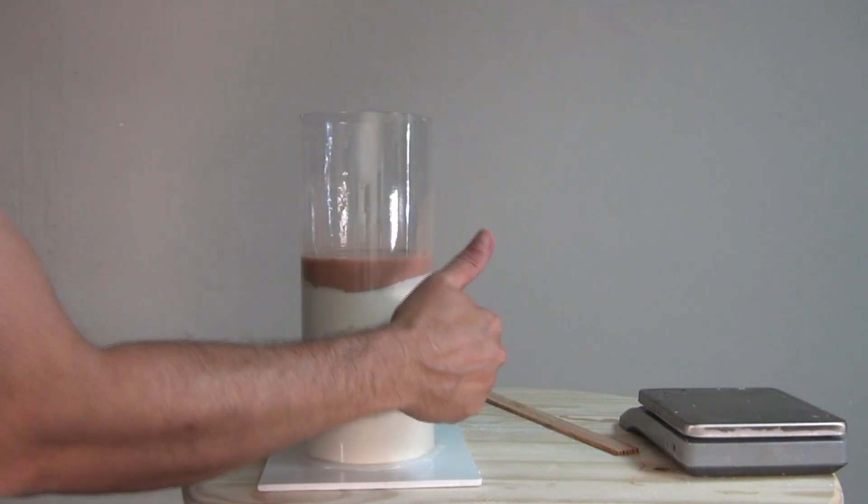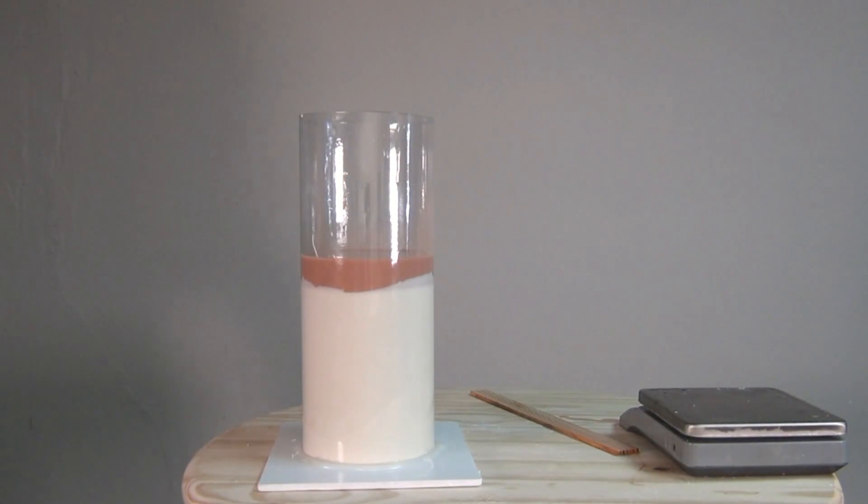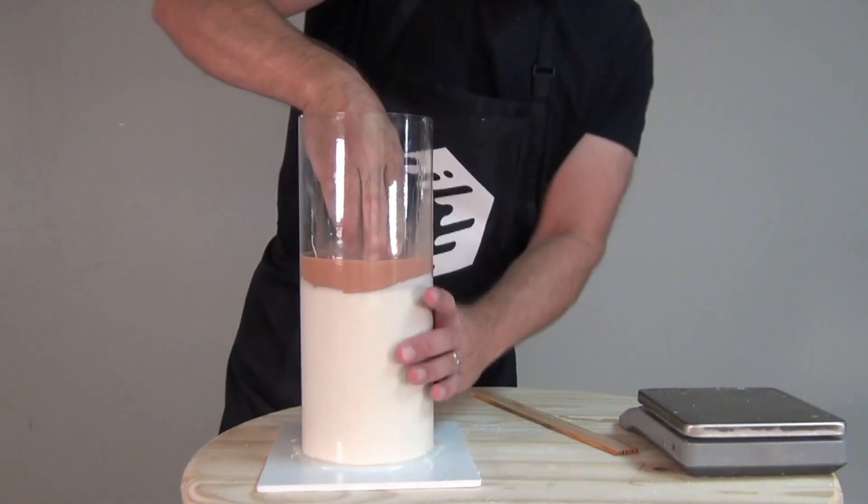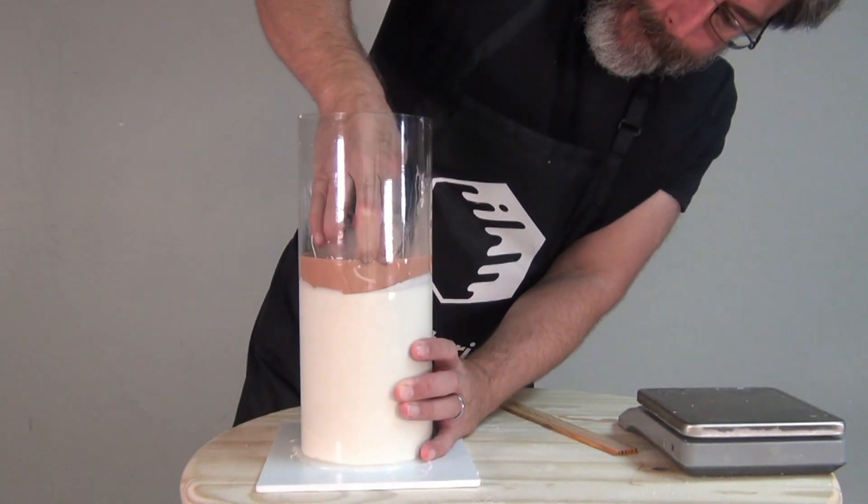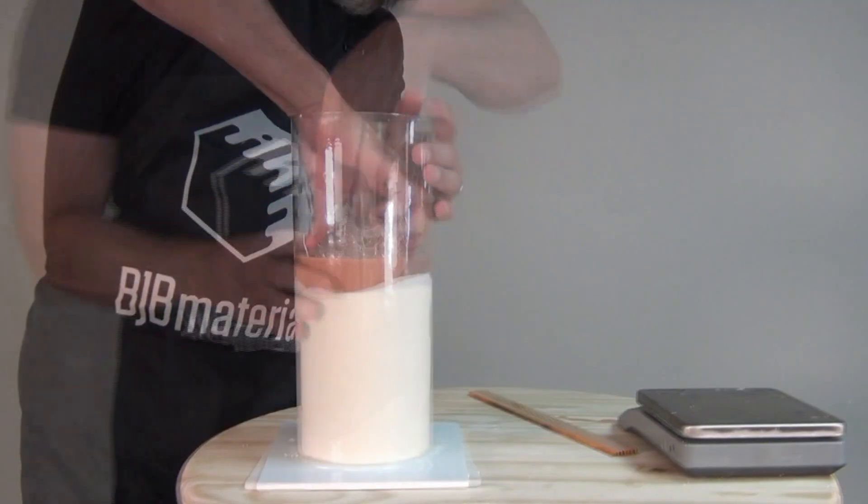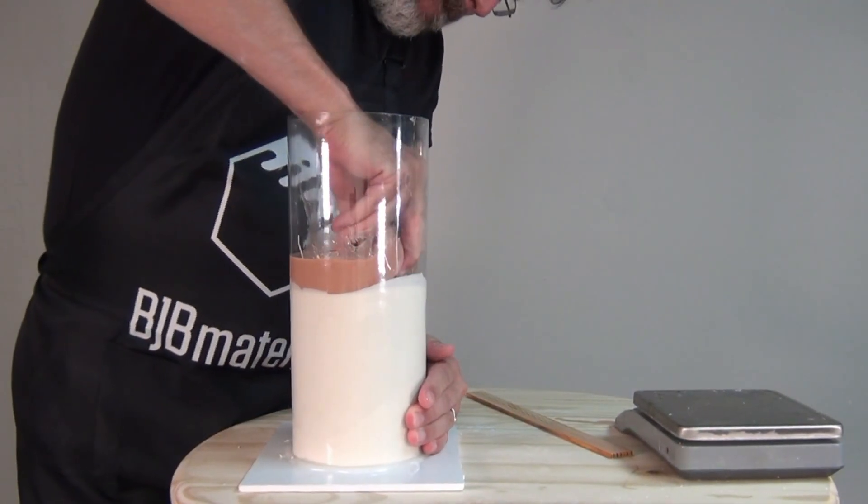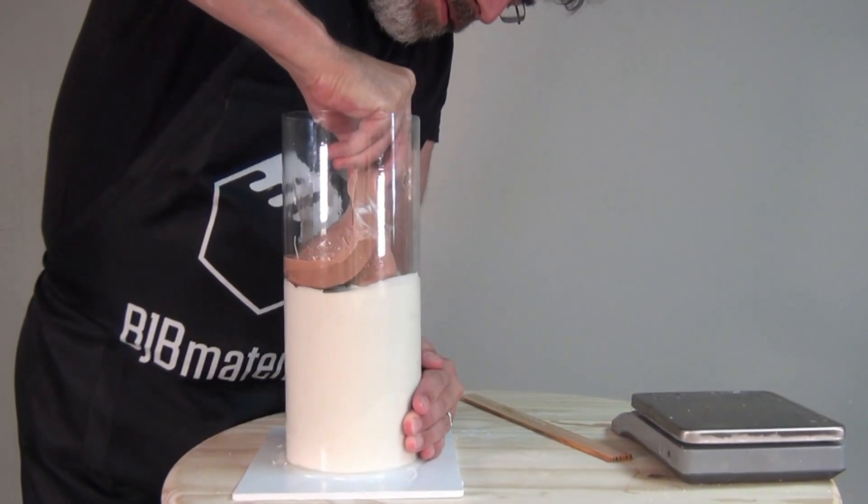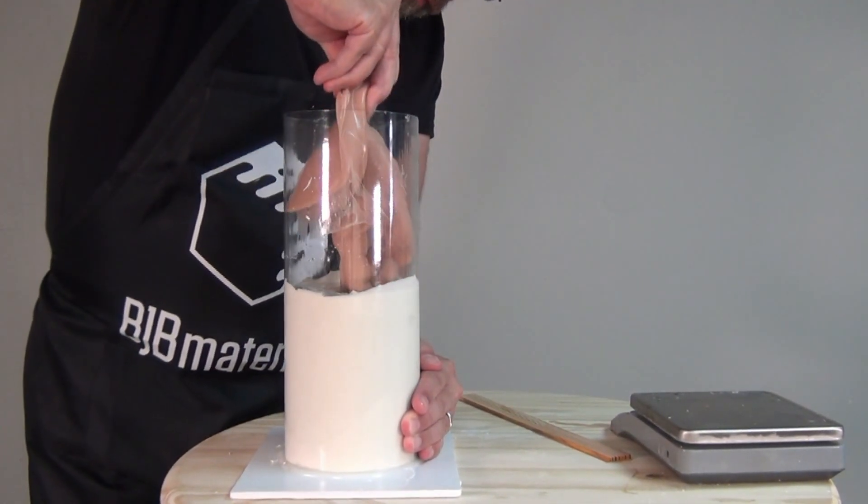So this is about an hour later. And of course, this being Texas, it really doesn't even take a full hour for this to set up here in the nice Texas heat. And again, if I'm careful, I can remove this without deforming the alginate mold. And then I'm ready to cast another copy.